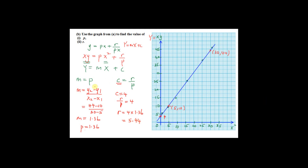In summary, for most part B questions you need to convert a non-linear equation into a linear equation in the form Y = mX + c, then find the gradient and y-intercept to determine the variables given in the question.